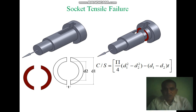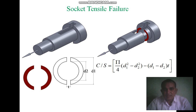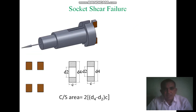We have found out the tensile stress sigma t, which is force per unit area. The tensile force is P and the cross-sectional area for this socket is also mentioned, so by using this we can find out the inside stresses present in the socket end.